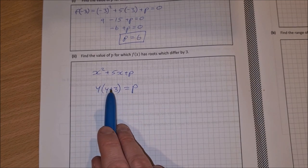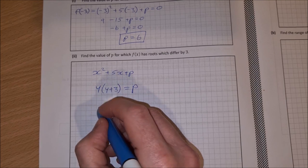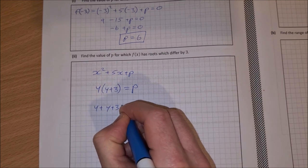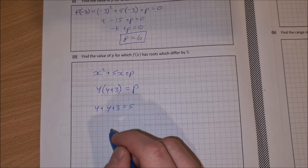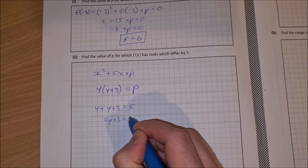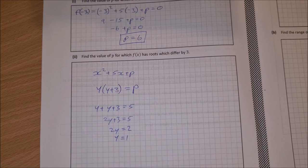Then the other part is, if I add these two roots together, I'll get the coefficient of x. So y plus y plus 3 is equal to 5. So that means 2y plus 3 is equal to 5, 2y is equal to 2, and y is equal to 1.